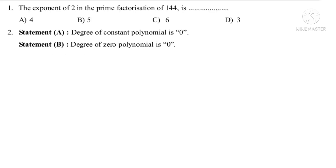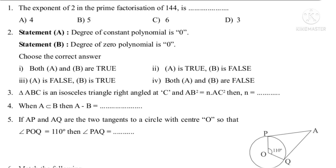Question 1: The exponent of 2 in the prime factorization of 144 is dash. Options A, B, C, D are given. This is a question from the chapter Real Numbers.